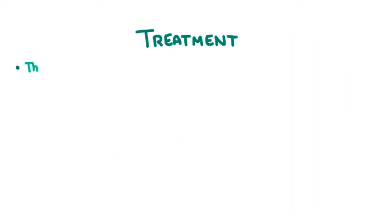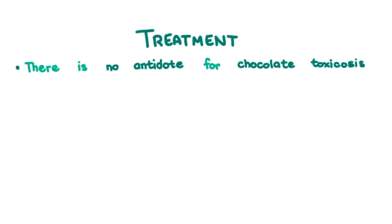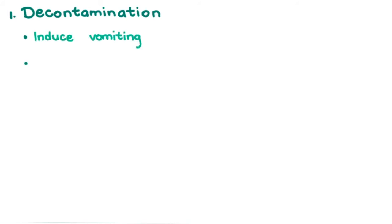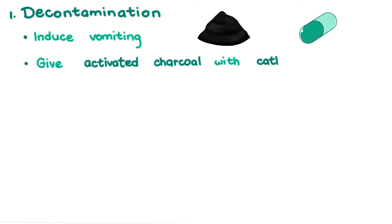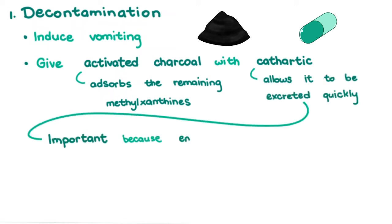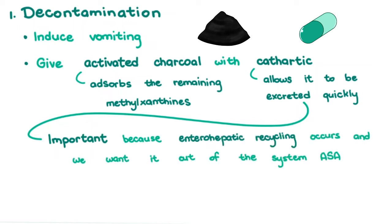There is no antidote for chocolate toxicosis. Treatment involves decontamination, symptomatic therapy, and supportive care. Decontamination is done by inducing vomiting and giving activated charcoal with cathartic. The activated charcoal adsorbs the remaining methyl xanthines, and the cathartic allows it to be excreted quickly. This is important because enterohepatic recycling occurs and we want it out of the system as soon as possible.